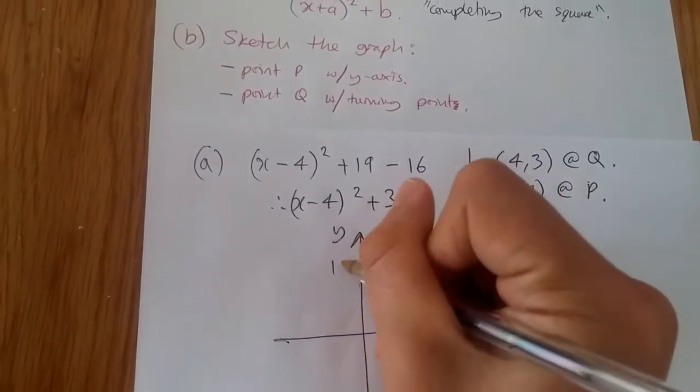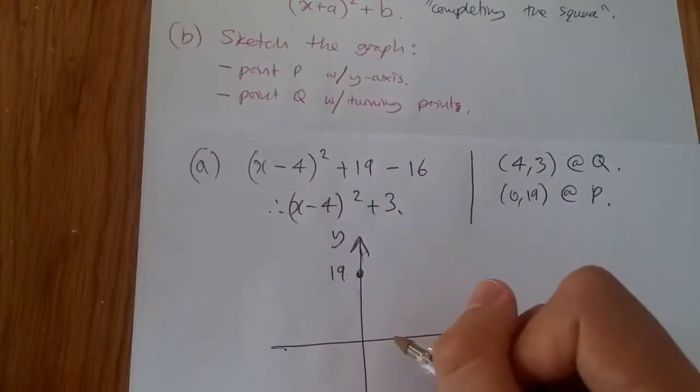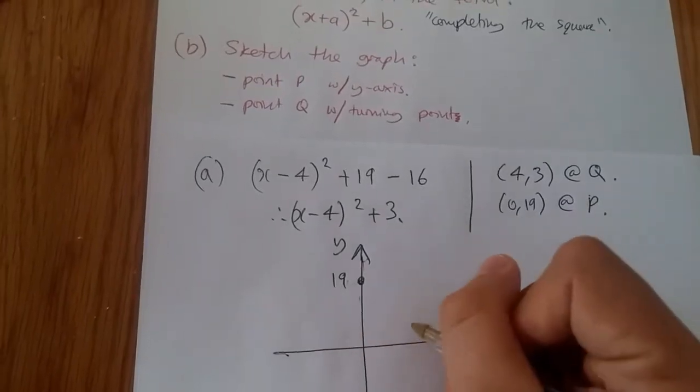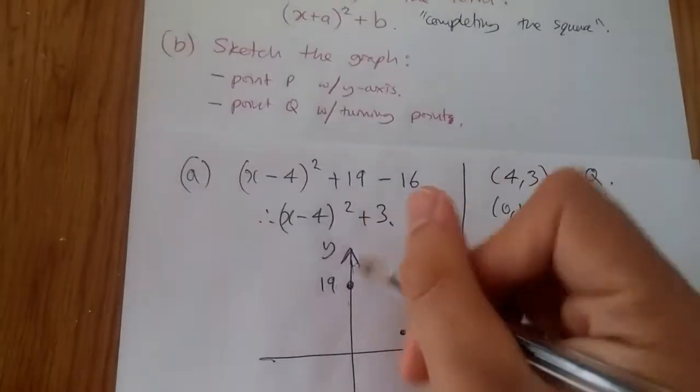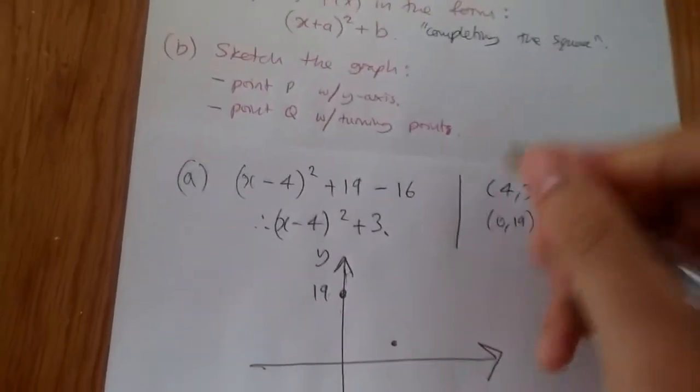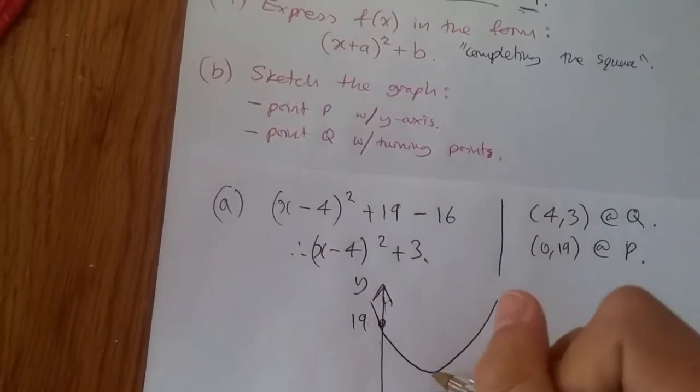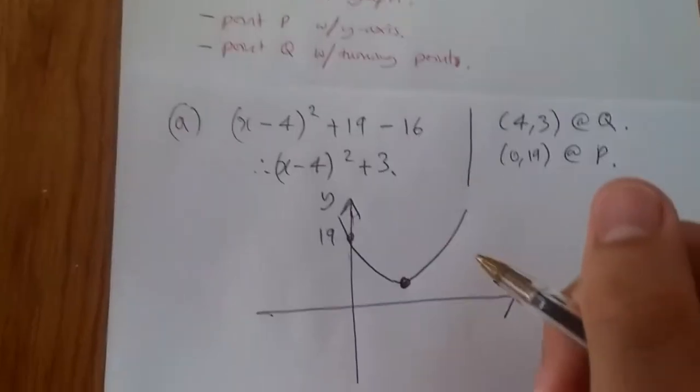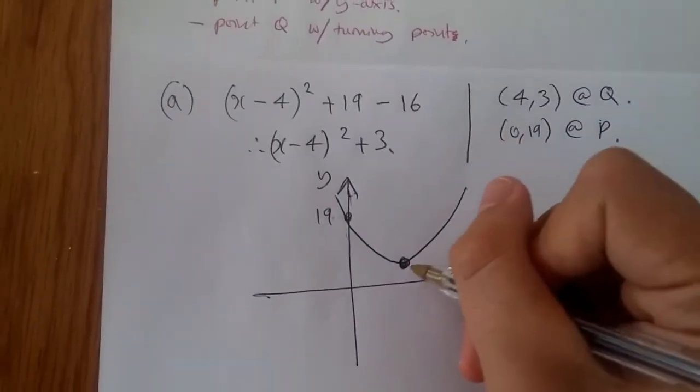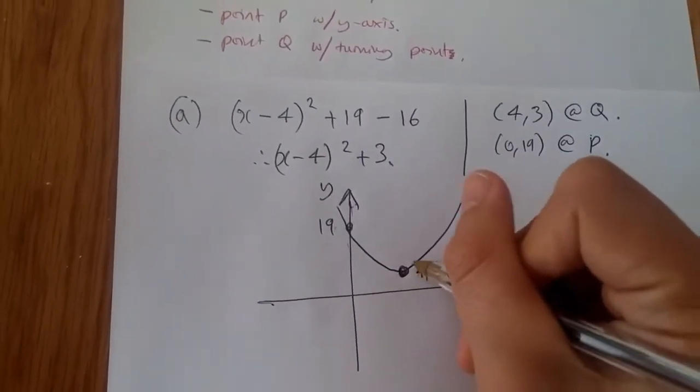We should have, say this is 19. Let's say we'll have 4. I don't know, 3 here. We'll make it so realistic. And now we just sketch a nice curve. And it should look like, yes, remember, turning point is always the lowest point on the equation, which is here. So this is, again, 4, 3.